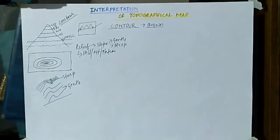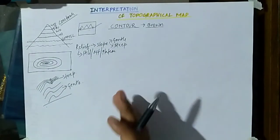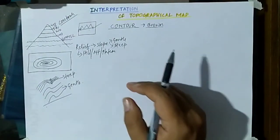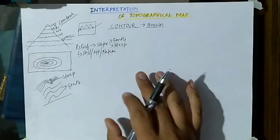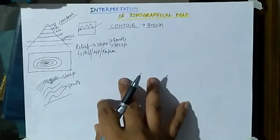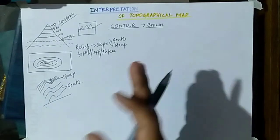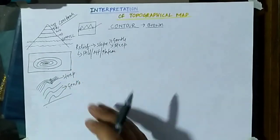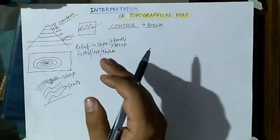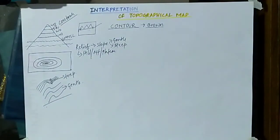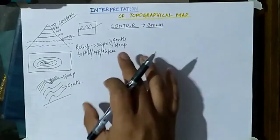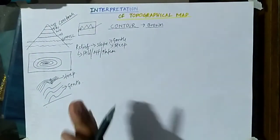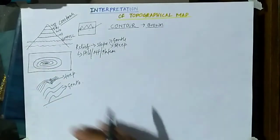In topographical sheet questions, you will be asked to identify the relief feature present in the map. So we need to identify what kind of relief feature it is and what kind of slope it has. That has to be identified by looking at the contours drawn on the map. I am going to teach you how to do this.